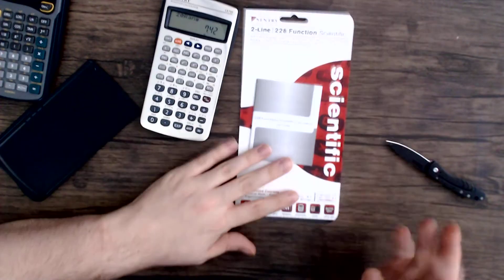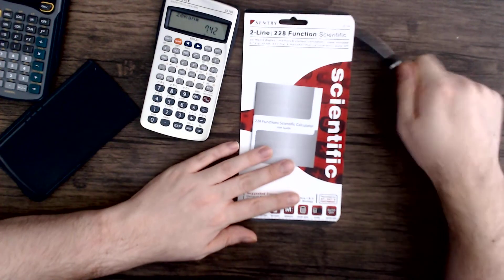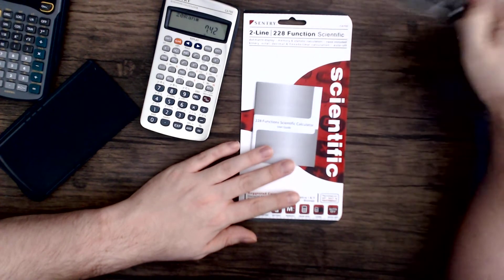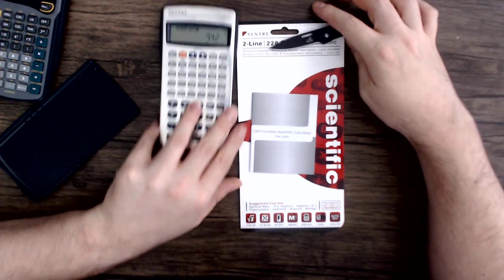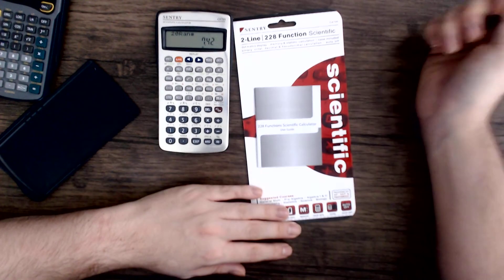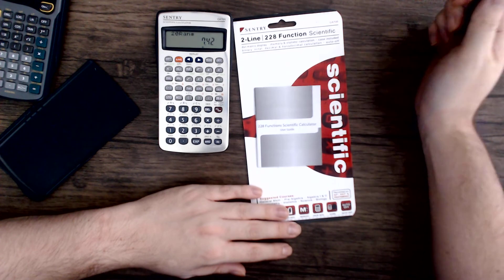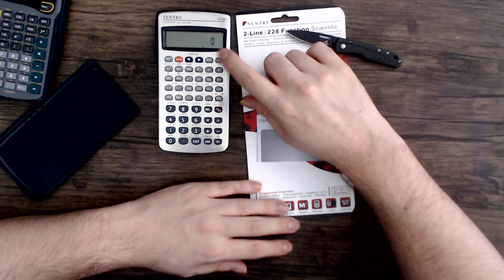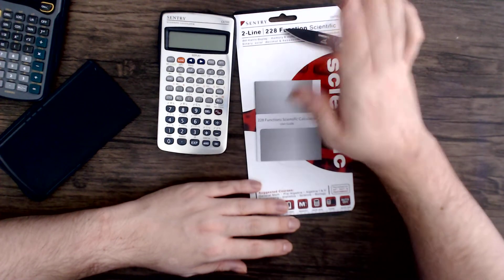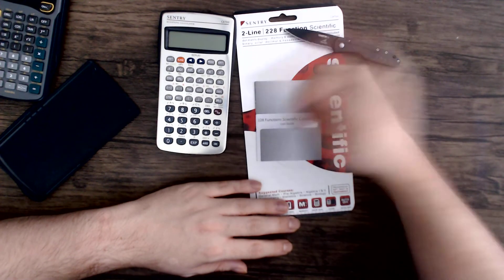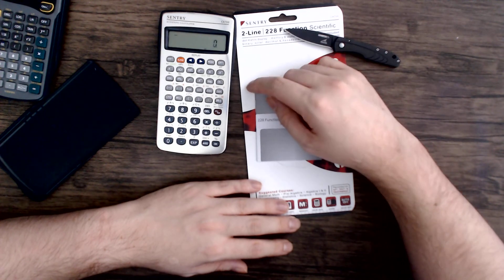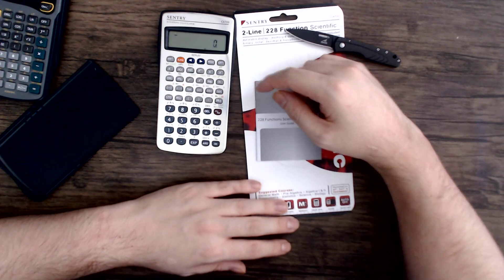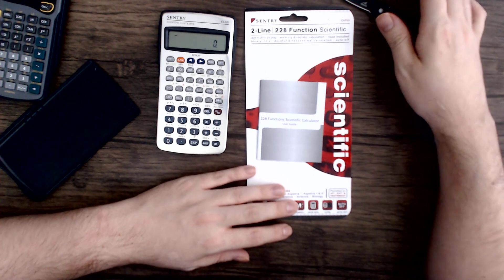That is the Sentry CA-700 Scientific Calculator. Not great. One of the worst screens I've ever seen on a calculator. That alone, I can't recommend this thing. Also, the off button being up in the upper right like that, and the on being here. What were they thinking? Anyway, I hope you enjoyed this. I did. And I hope you have a great day. Bye!